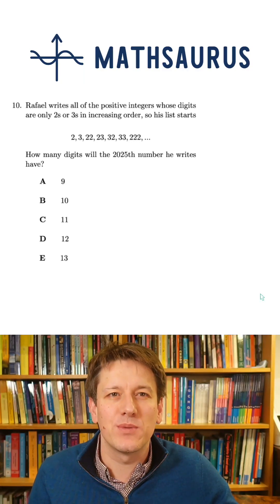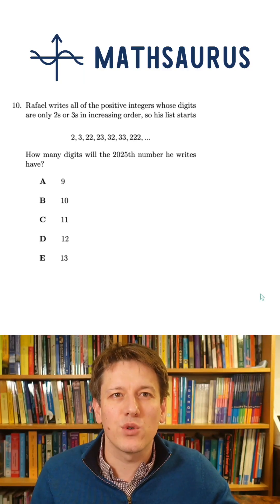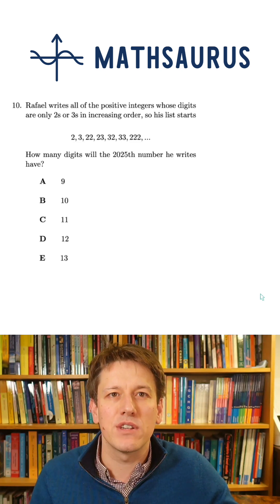This is an incredibly hard maths challenge question with 2025 in it. Raphael writes all of the positive integers whose digits are only twos or threes in increasing order.